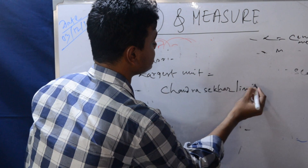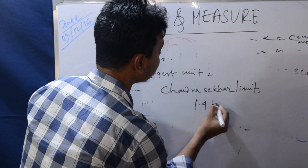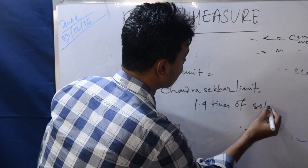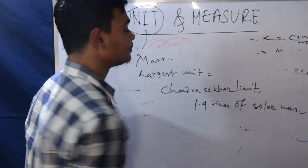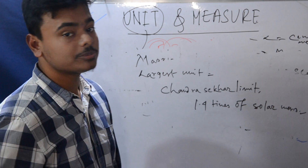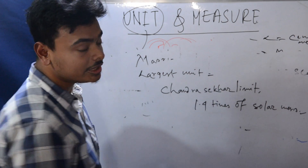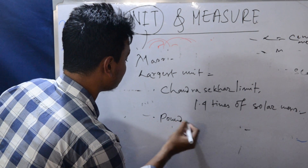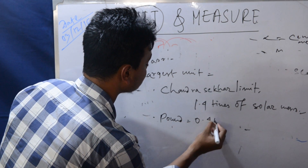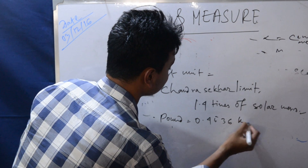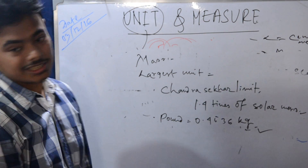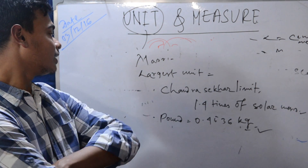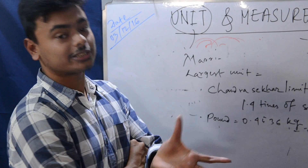The largest unit of mass means 1.4 times the solar mass. Another common mass unit used is the pound, which equals 0.4536 kilograms.